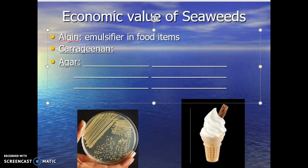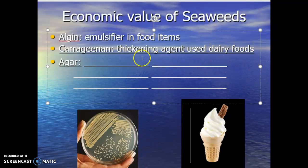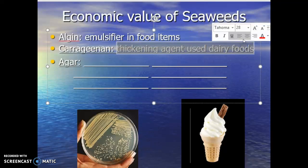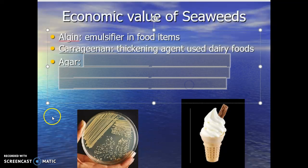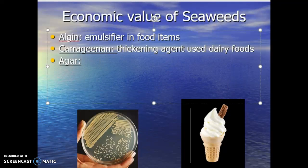Carrageenan is a similar concept — it's another thickening agent. This one is used in a lot of dairy foods to make them thicker: more ice cream, chocolate milk. Take a look at your chocolate milk — carrageenan is going to be a component of that, again, to make it thicker and help everything bond together better.